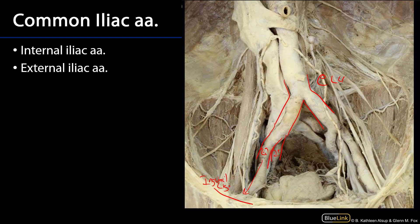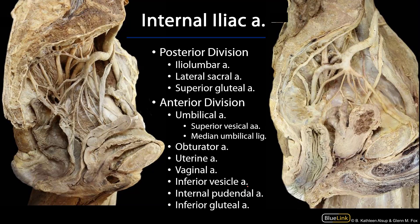The internal iliac artery enters into the pelvic cavity where it's going to supply the various pelvic viscera with blood as well as the majority of the perineum. So let's look at that now.